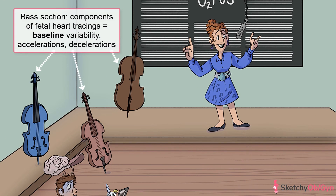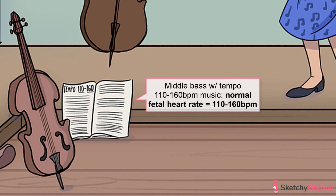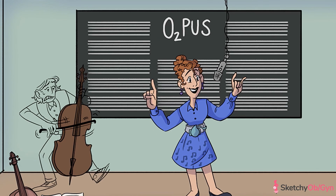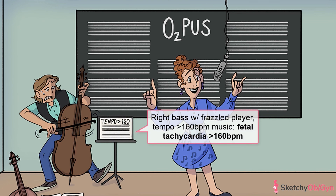The first component of the FHT to assess is the baseline, symbolized as the base section. The baseline is the average fetal heart rate over 10 minutes — find the horizontal line that looks like the average of the entire squiggle, holding for at least 10 minutes. A normal baseline is between 110 and 160 BPM, symbolized by the middle bass and its sheet music at the same tempo. Fetal tachycardia, symbolized by a frazzled bass player playing fast music, is anything greater than 160 beats per minute.